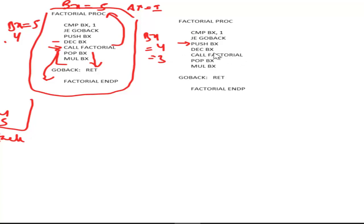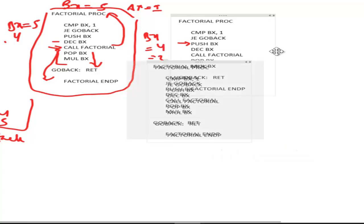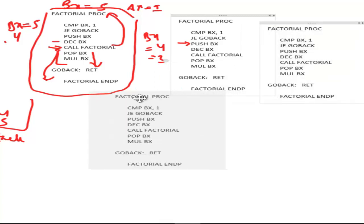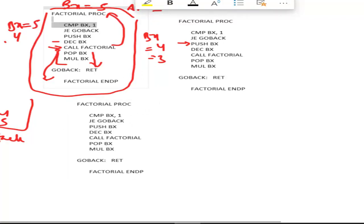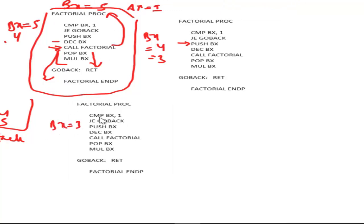Now it decrements BX so BX becomes 3, and it calls the factorial program again — calls to itself again. So it's again running the same factorial procedure. Since it's calling itself, it's again comparing BX: what is BX for this call? BX is now 3. So it is comparing BX with 1 — is BX 1? No, it's not.